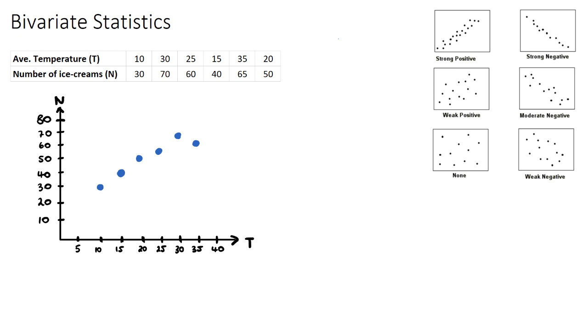Because when it's cold, ice creams aren't very popular, people might opt for a hot chocolate or a coffee, but when the temperature increases and it gets quite hot, ice creams are definitely more popular. So I have our data here, and our temperature is in degrees Celsius on our horizontal axis, and the number of ice creams is on the vertical axis, and I've plotted my points here.